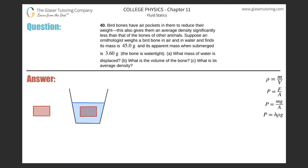Number 40. Bird bones have air pockets in them to reduce their weight; this also gives them an average density significantly less than that of the bones of other animals. An ornithologist weighs a bird bone in air and in water and finds its mass is 45 grams and its apparent mass when submerged is 3.6 grams, and the bone is watertight. Part A: what mass of water is displaced?